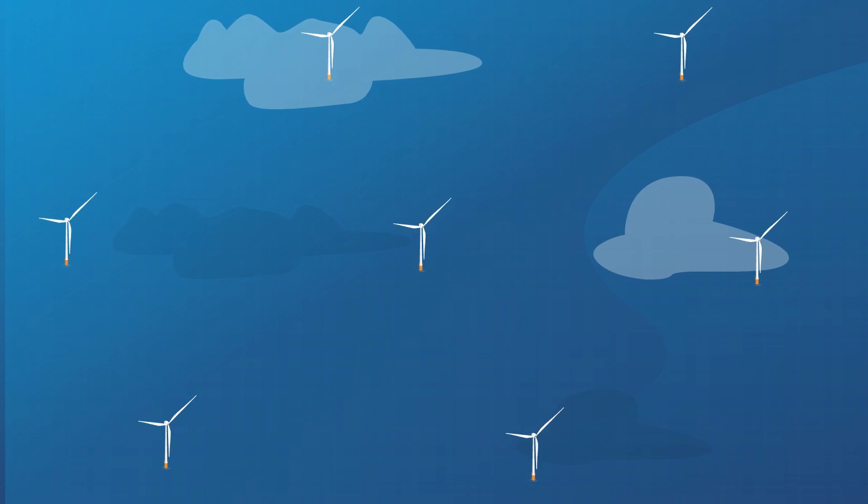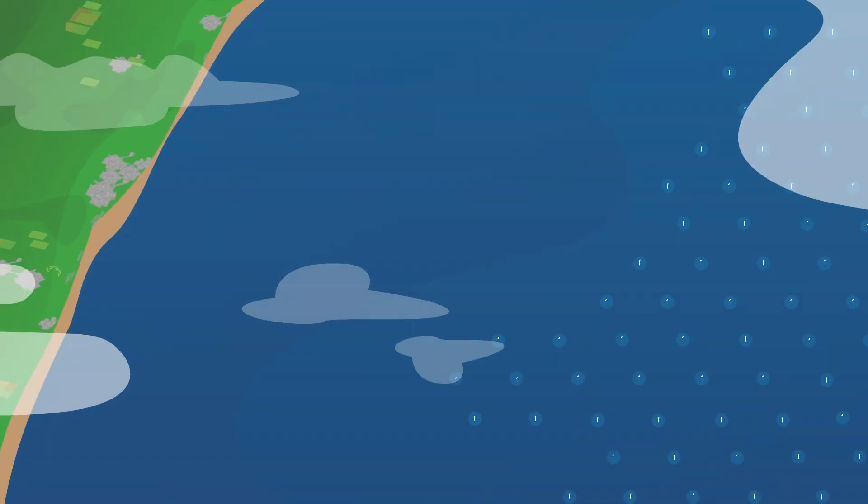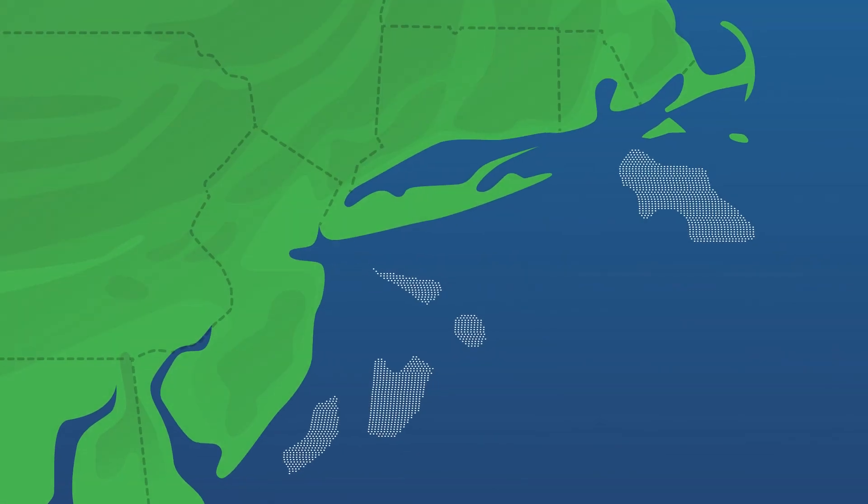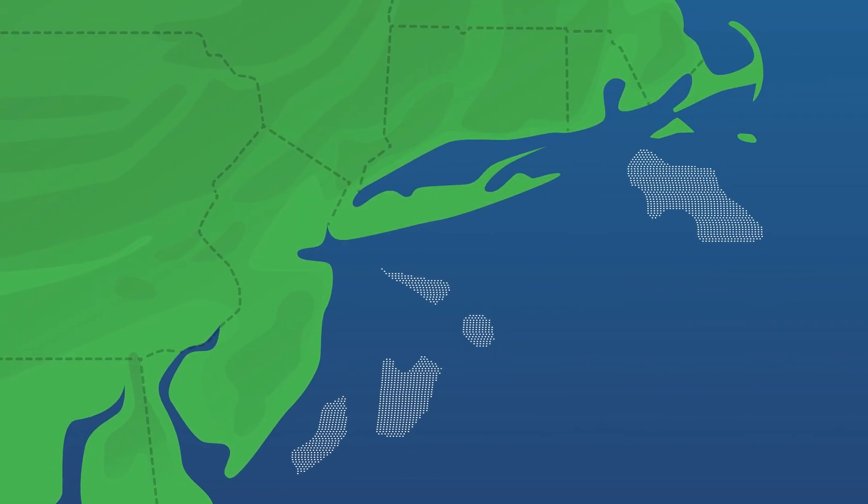With plans to build more than 2,000 skyscraper-sized offshore wind turbines by 2035, a lot of new structures will soon be added to the ocean off the east coast of the U.S.